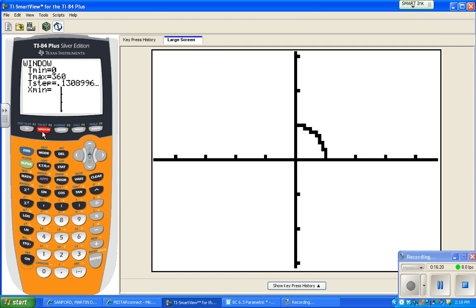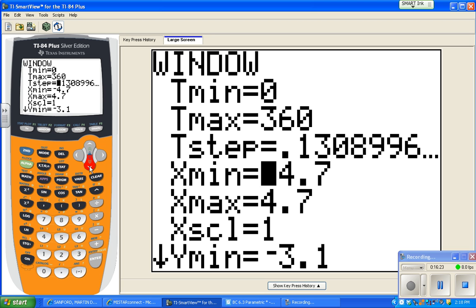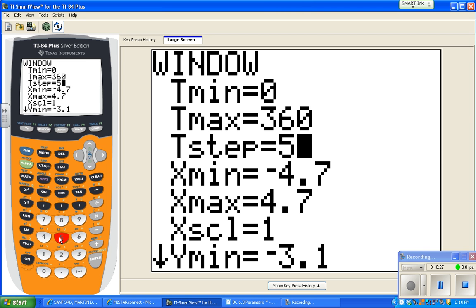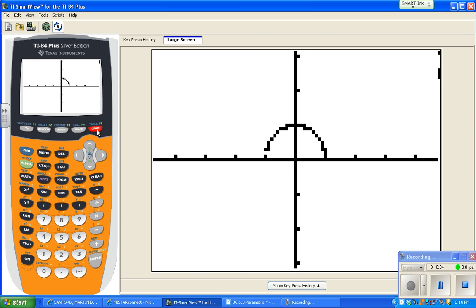I'm going to go back to window, and I'm going to change this t-step to 5. So now it's going to calculate the answers for x and y every 5 degrees. So let's hit graph. So that's real reasonable. Not bad.